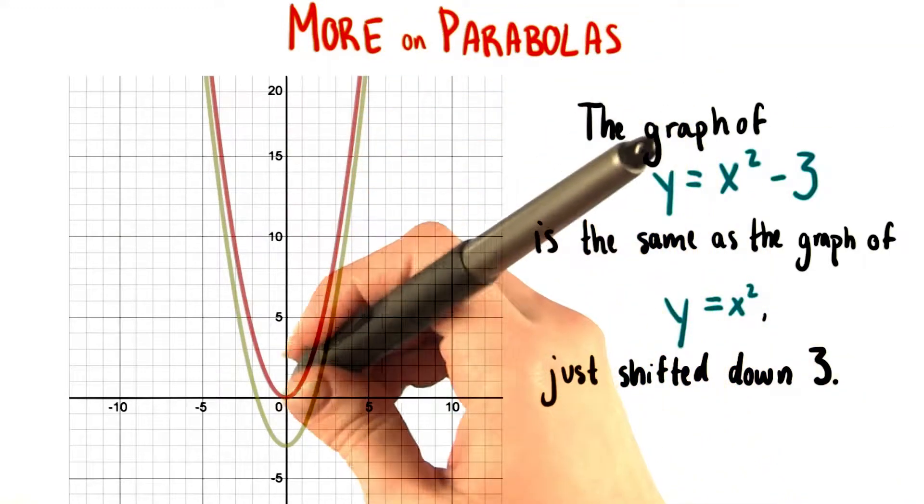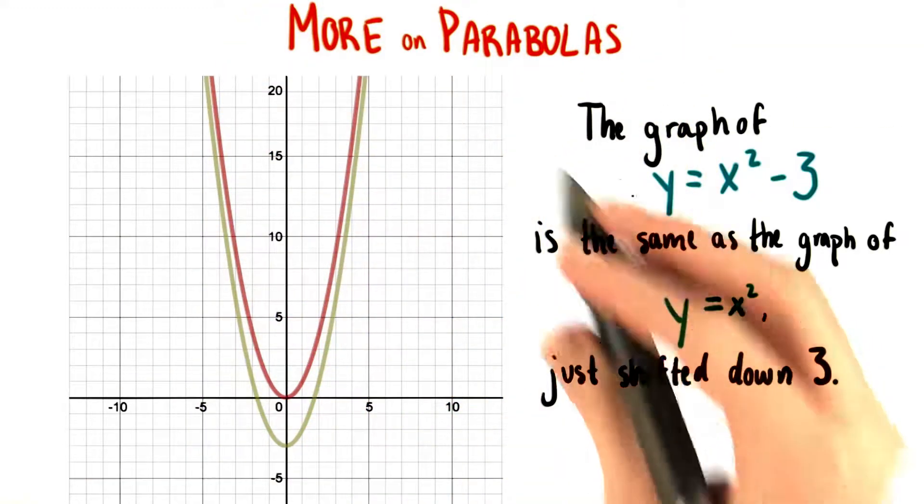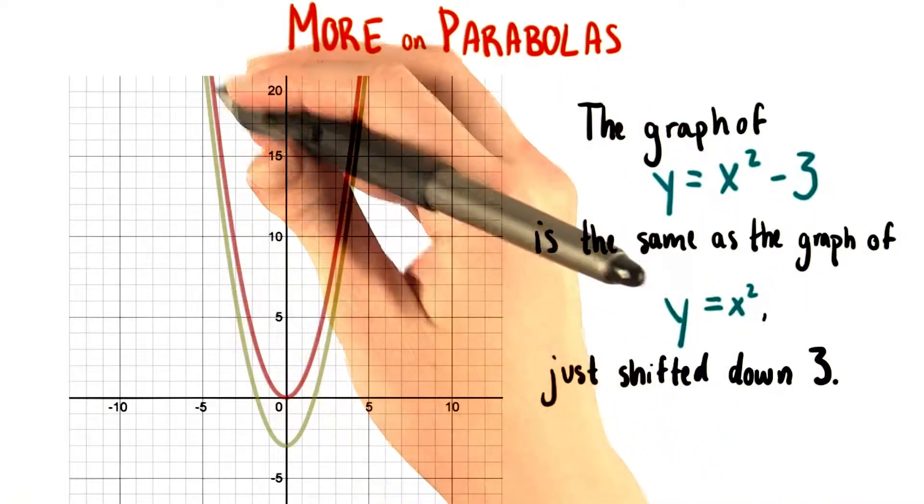The graph of y equals x squared is this red curve, and the graph of y equals x squared minus 3 is the greenish yellow one.